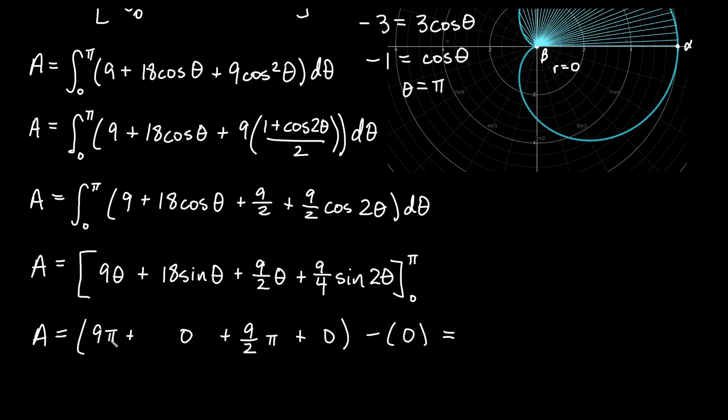So we get 9 pi plus 9 halves pi, also known as 18 over 2 pi plus 9 halves pi. And if we add those together, we'll get 27 pi over 2 for our area inside of this cardioid.